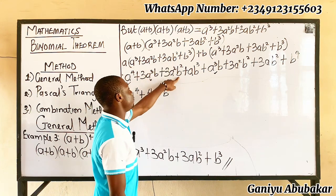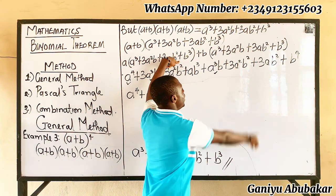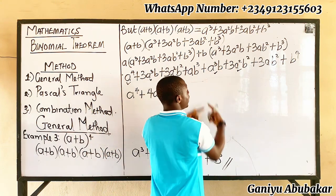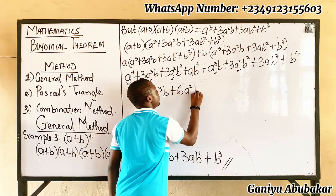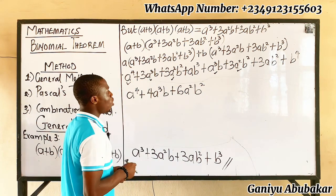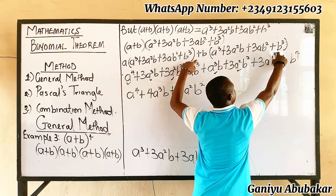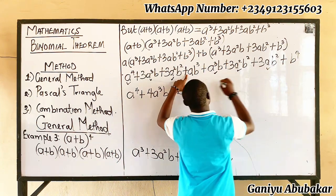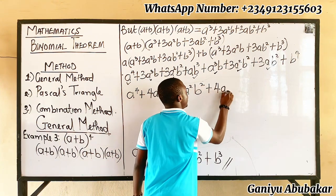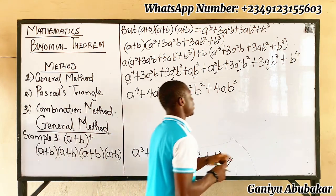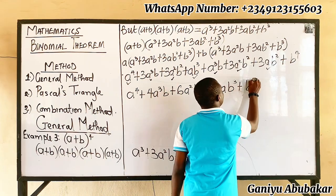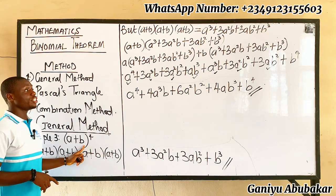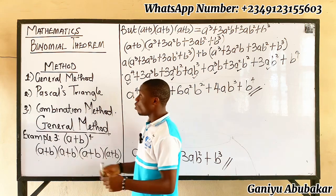So the final answer for (a + b)⁴ is: a⁴ + 4a³b + 6a²b² + 4ab³ + b⁴. That is the answer after solving this particular problem using the concept of the general method of binomial theorem.